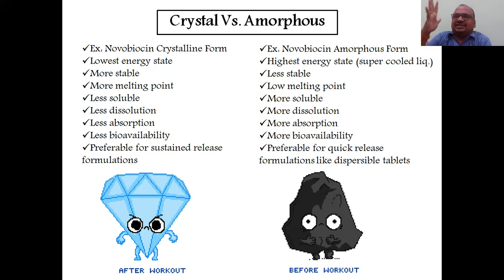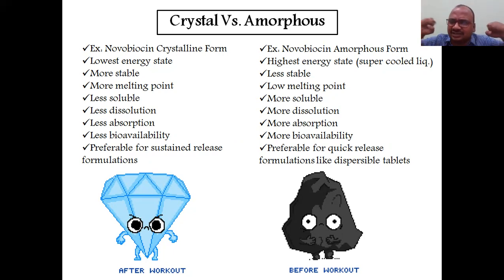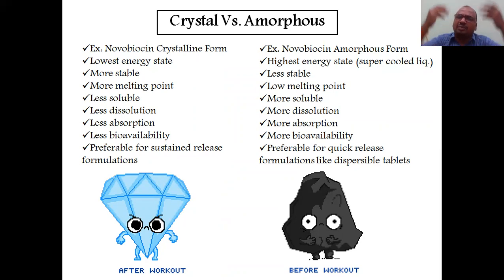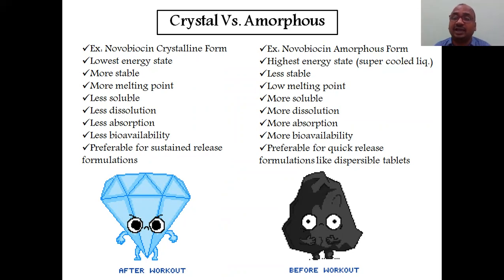Novobiocin amorphous form is also called a supercooled liquid — it is the highest energy state. Since it has the highest energy, it immediately interacts with surrounding solvent. It is less stable, has a low melting point, is more soluble, shows more dissolution, more absorption, and more bioavailability. It is preferable for quick-release tablets like dispersible tablets and chewable tablets.